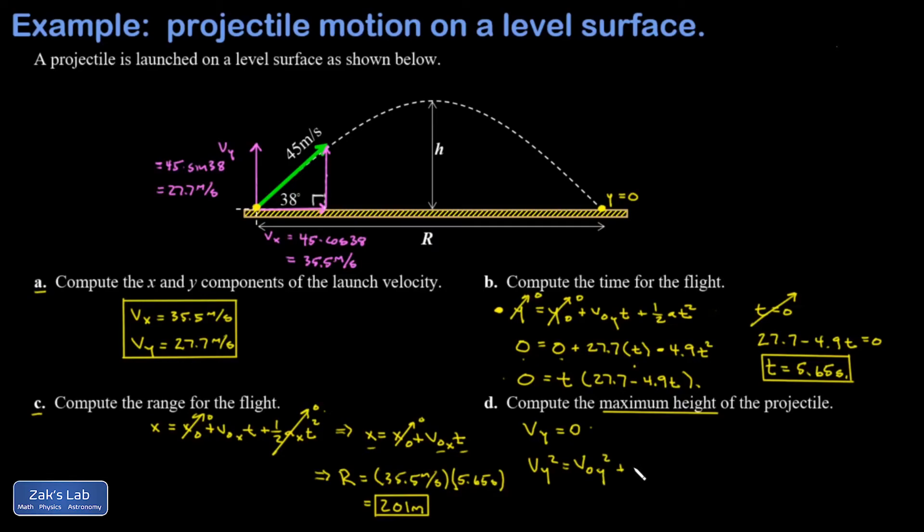Again, these formulas are all valid as long as the acceleration is constant, which it is in the y direction for projectile motion, constantly negative 9.8. So this offers me a bit of a shortcut. I can plug in that Vy is equal to zero and I'm going to ask what's the y coordinate at that moment in time. My initial y coordinate also zero. So plugging in the numbers here I get zero equals v not y squared, that's 27.7 squared, minus, because I'm going to plug in a equals negative 9.8, 2 times 9.8 times my final y coordinate.